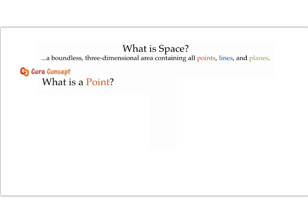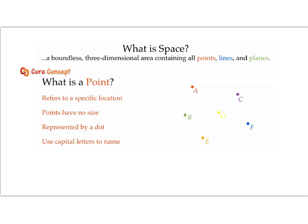This leads us to our first core concept: what is a point? A point refers to a specific location, it has no size, it's usually represented by a dot, and we use capital letters to name it. Make sure your capital letters are printed uppercase letters. If I were to name the yellow dot, I can name it with a printed capital D. Later you'll learn what scripted capital letters represent, which is different from these.